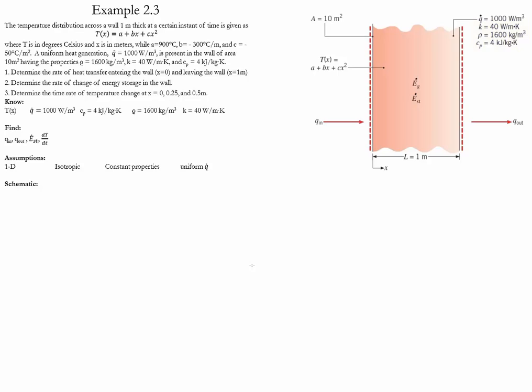We need to determine the heat rate transfer entering the wall, also leaving the wall. We need to determine the rate of change of energy stored in the wall. And we need to determine the time rate of temperature change at x equal to zero, at x equals 0.25, and x equals 0.5 meters.